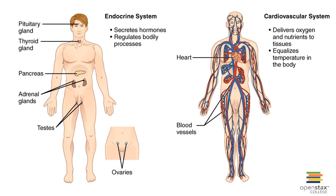The endocrine system is composed of hormone-secreting glands like the thyroid gland, pituitary, adrenal, pancreas, pineal, and others. It functions to secrete hormones that direct long-term changes in the activities of other organ systems. The cardiovascular system is composed of blood, heart, and blood vessels, and provides internal transport of nutrients and oxygen to body cells while removing wastes and carbon dioxide away from body cells.